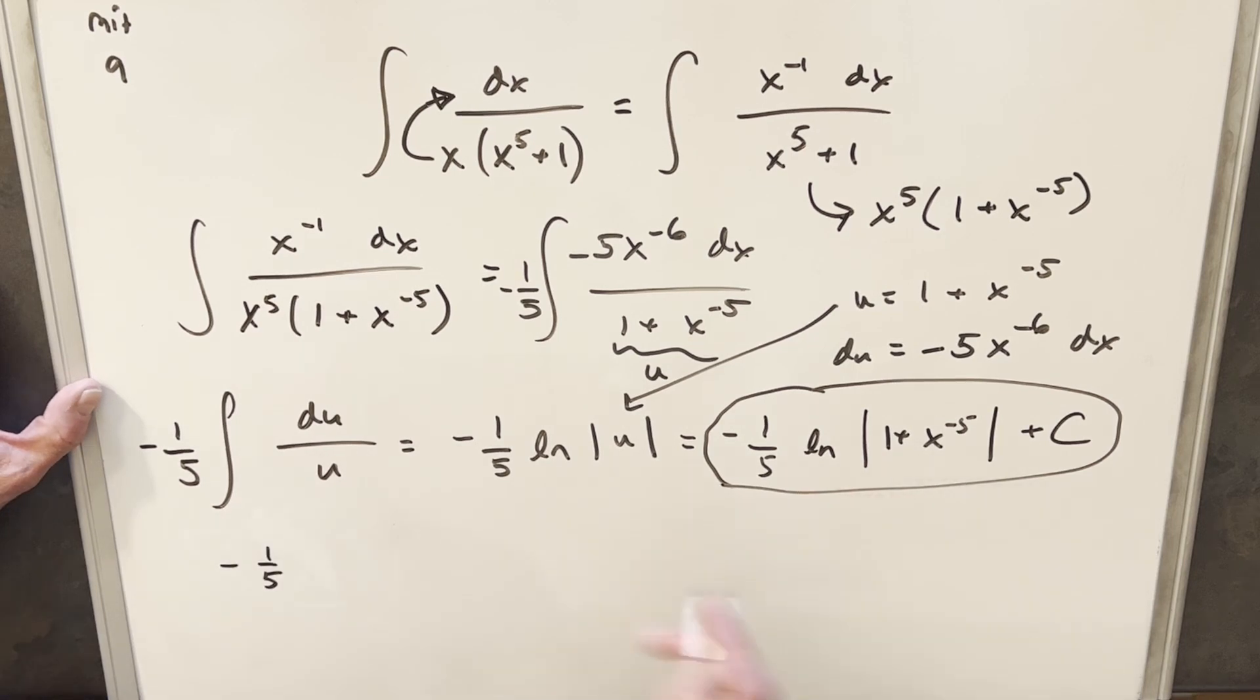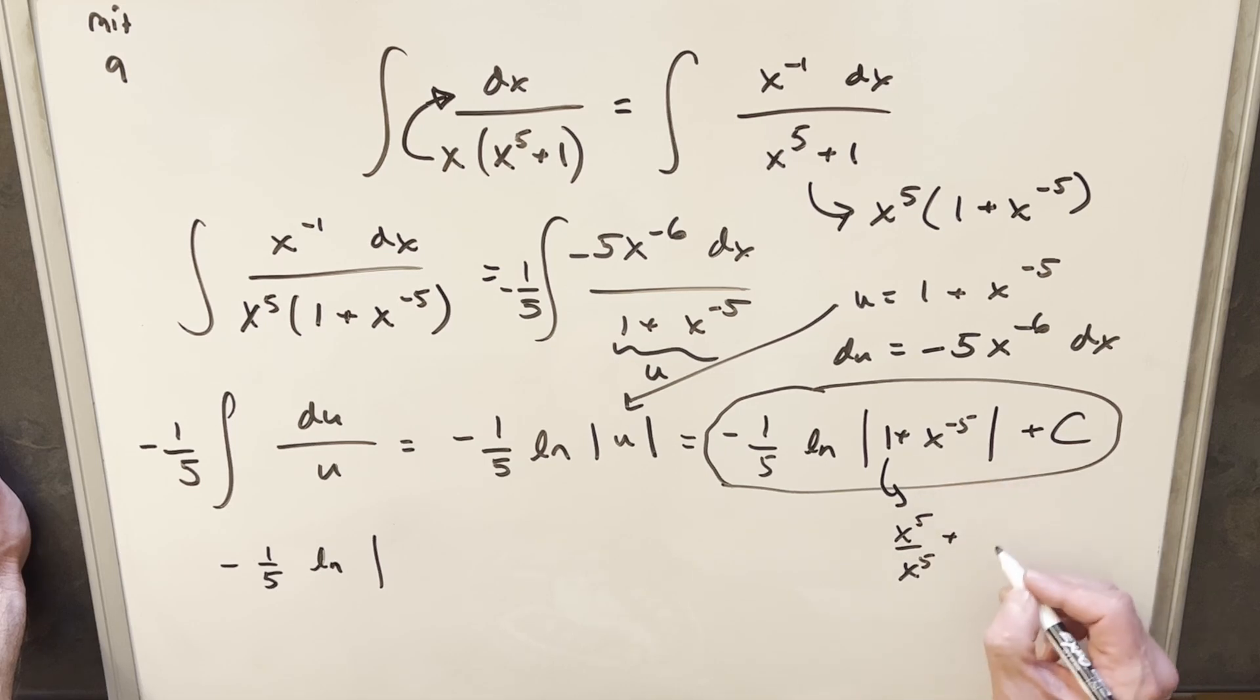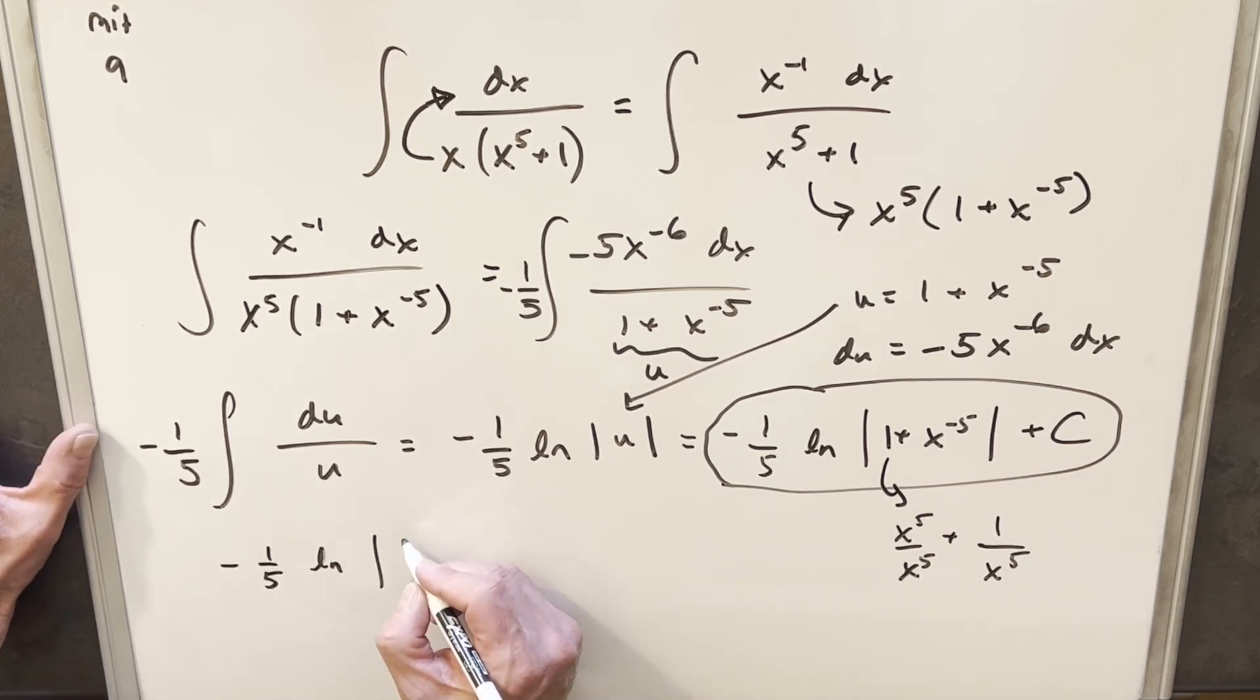So what they did is they simplified what's inside here. So they wrote this 1 as x to the 5th over x to the 5th. And x to the minus 5 is just 1 over x to the 5th. So adding these two together, we have x to the 5 plus 1 over x to the 5.